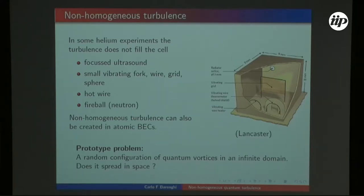In general, the problem which I define as the prototype problem is what happens if you have a random configuration of vortices in the middle of your domain, which is very large, say infinite. Does the quantum turbulence spread in space, diffusing out? That's a very simple question which I'm addressing.